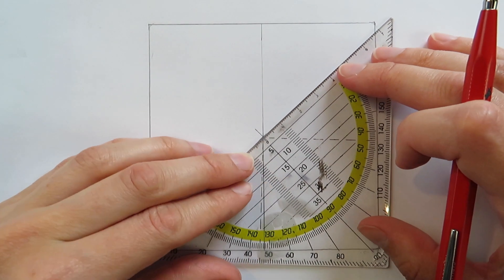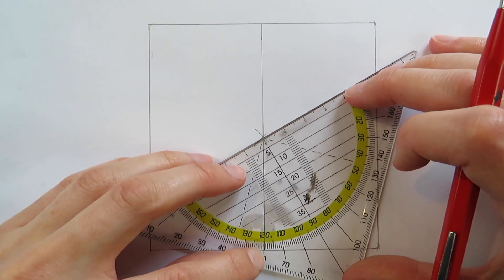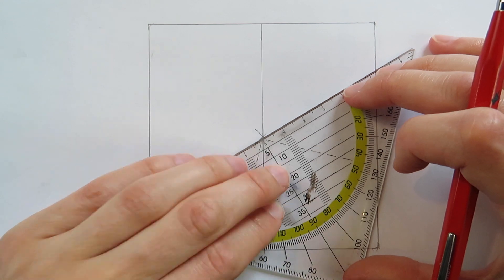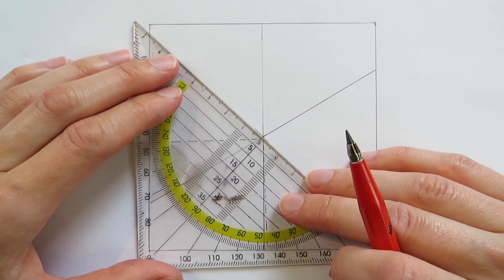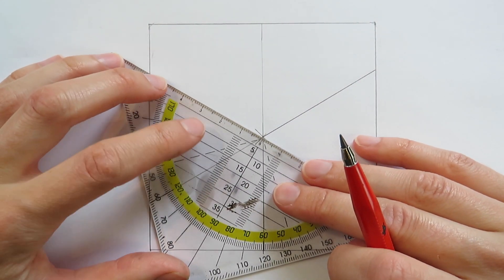After that, we put the set square to the middle point and measure 60 degrees and draw a line. Then to the other side, again 60 degrees. So each angle is 60 degrees.